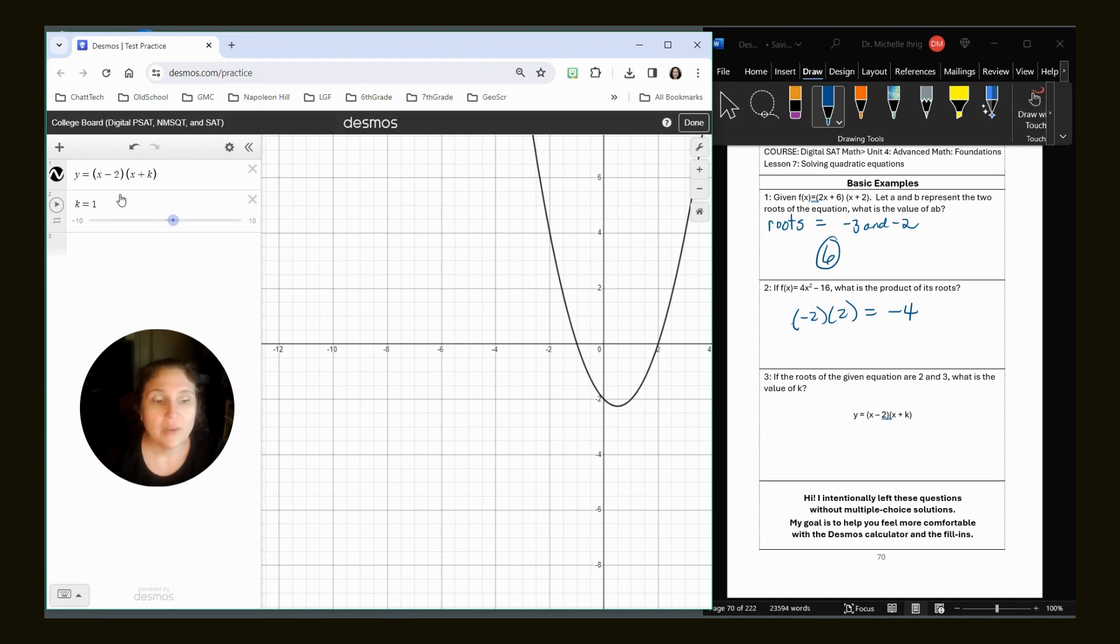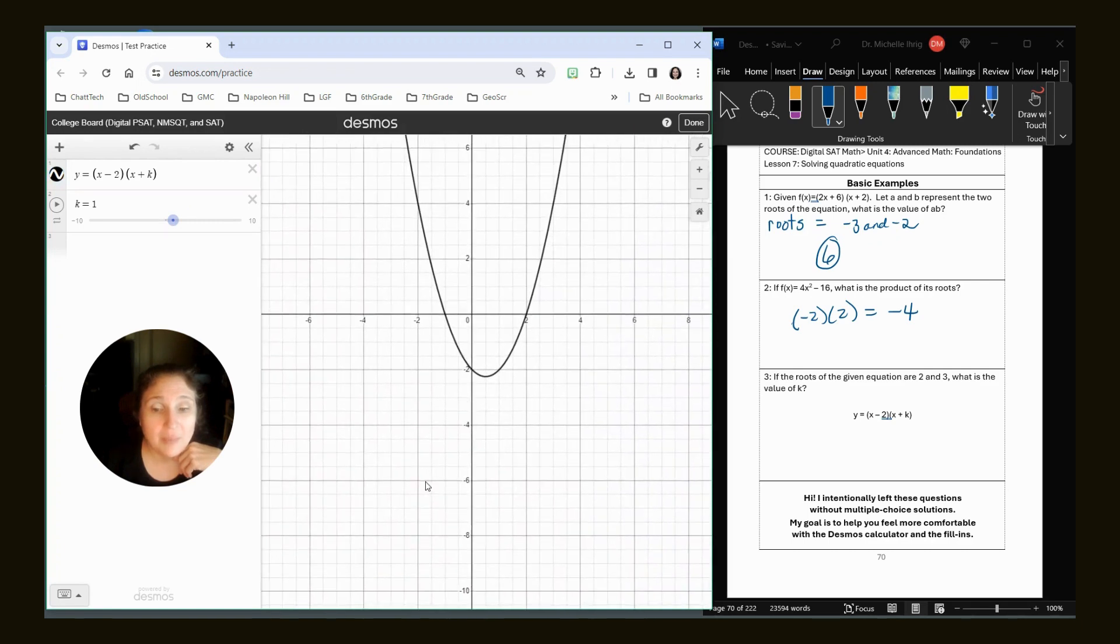Now we want to have our roots are two, which we have right here. But we also want our root to be three. So we're going to keep, hopefully you know the answer is negative three. Okay. But I'm showing you how to do this in case you didn't.